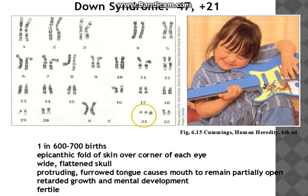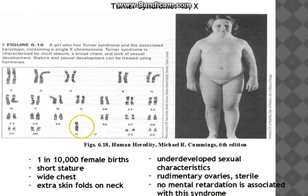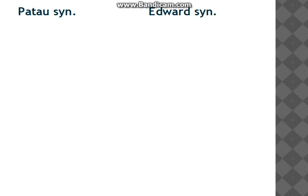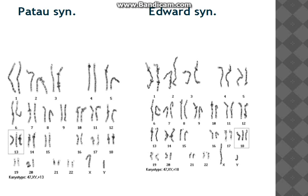In Down syndrome, there is trisomy of chromosome 21; we can see in the picture that chromosome 21 is present in three copies. Turner syndrome shows only one X chromosome with no second X chromosome present. Klinefelter syndrome has a pair of X chromosomes and one Y chromosome — an extra X chromosome. Patau syndrome is trisomy of chromosome 13, and Edwards syndrome is trisomy of chromosome 18.